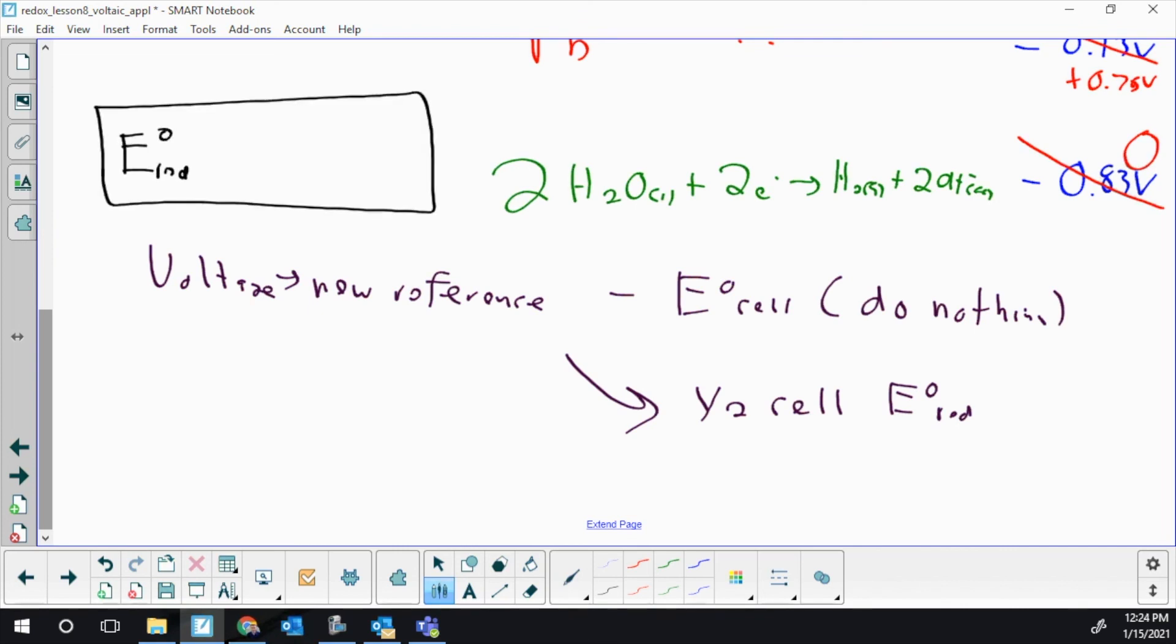If you want to solve for that reduction potential, the new one, I'm just going to write out what I said orally. You take the E° reduction of the old and subtract the E° reduction of your new reference. I wanted you to see the subtracting the 0.83 before I try to turn it into a formula.